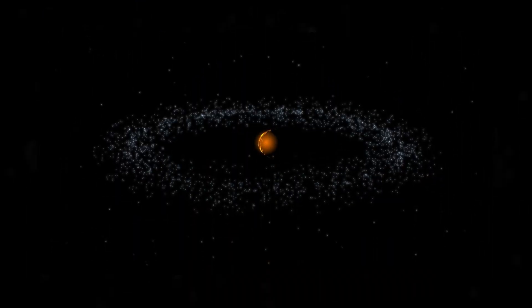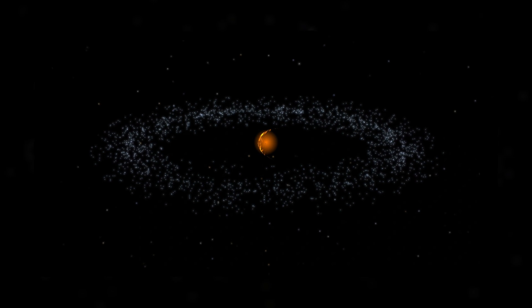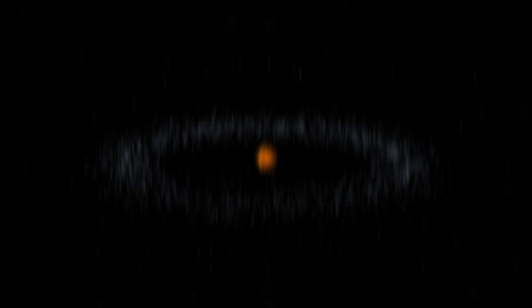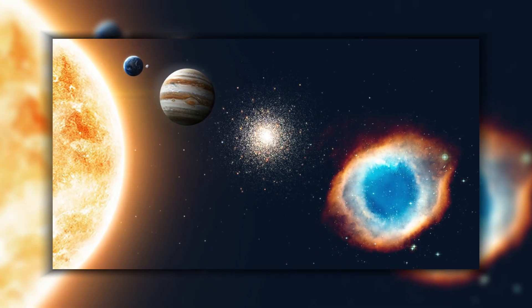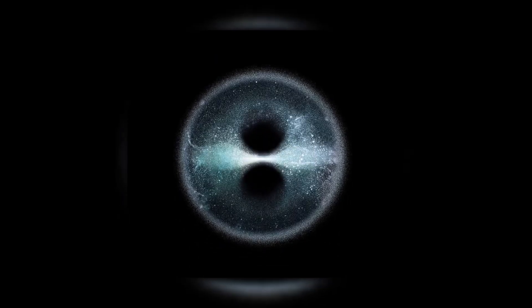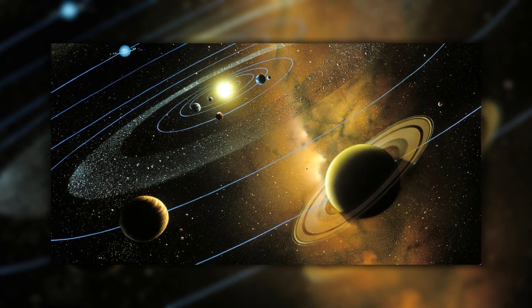Hill's Cloud is a theorized cloud of minor planets and comets located between 3,000 and 20,000 astronomical units from the Sun. It is thought to be a reservoir of long-period comets with orbits of more than 200 years. The existence of such a structure could revolutionize our understanding of comet origins and solar system dynamics.